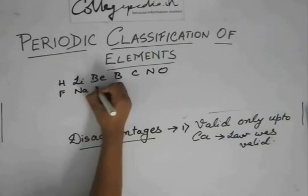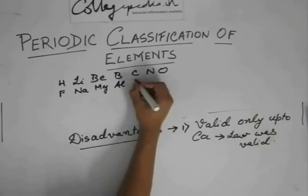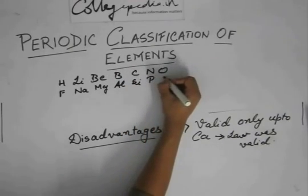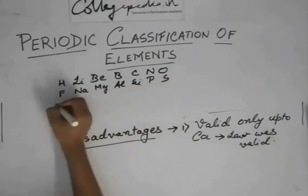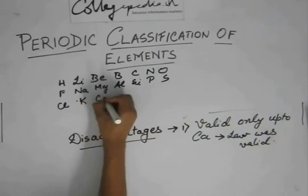Sodium, Magnesium, Aluminium, Silicon, Potassium - no not Potassium - Phosphorus, Sulphur, Chlorine, Potassium, Calcium.